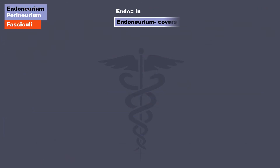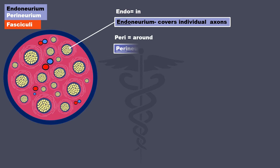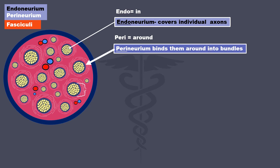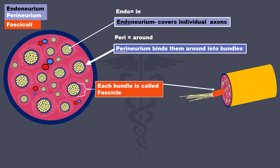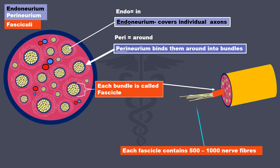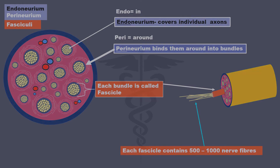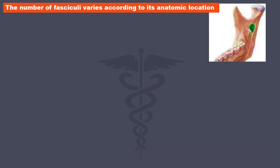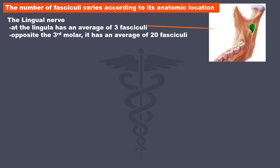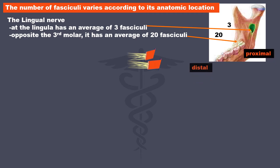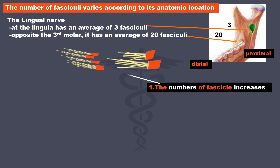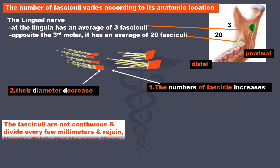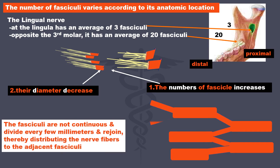'Endo' means in, and endoneurium covers individual axons. 'Peri' means around, and perineurium binds them around into bundles. Each bundle is called a fascicle, and each fascicle contains 500 to 1000 nerve fibers. An interesting fact is that the number of fasciculi varies according to anatomic location. For example, the lingual nerve at the lingula has an average of 3 fasciculi, while opposite the third molar it has an average of 20 fasciculi. From proximal to distal, the number of fasciculi increases while their diameter decreases. The fasciculi are not continuous — they divide every few millimeters and rejoin, thereby distributing nerve fibers to adjacent fasciculi.